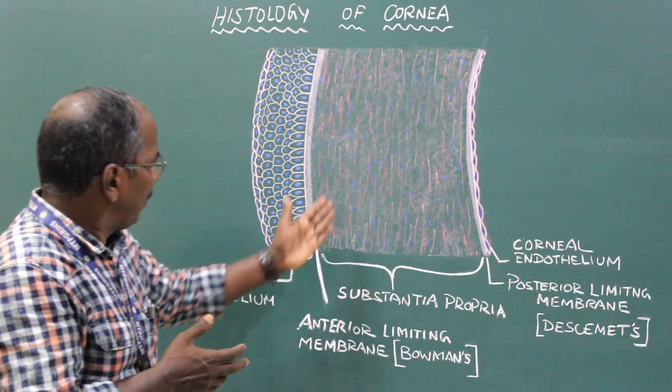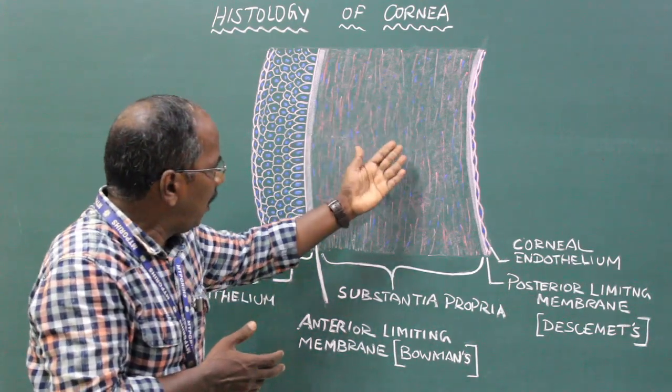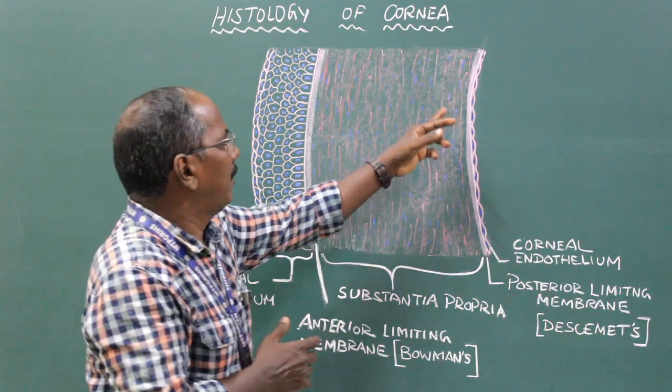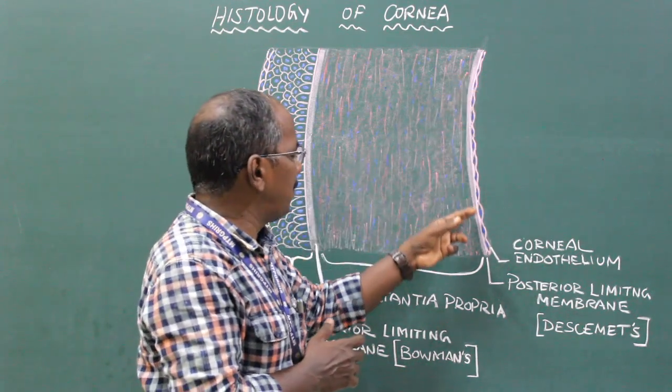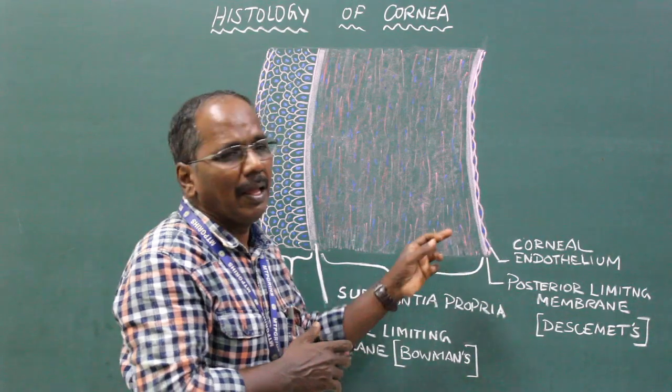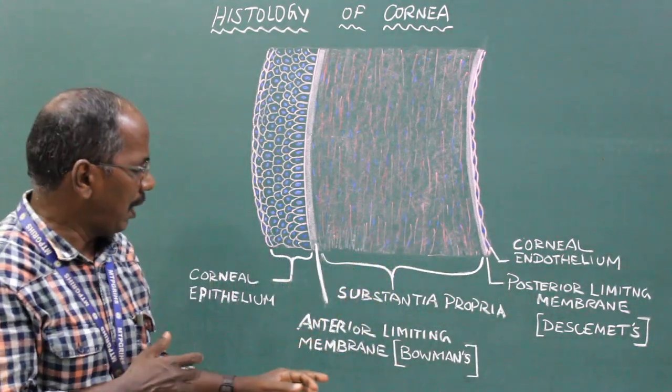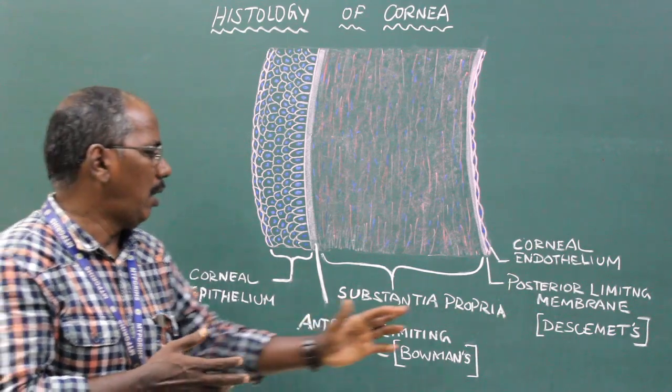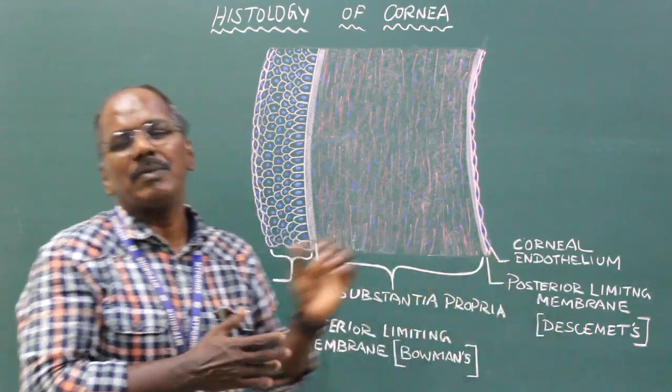The substantia propria of the corneal stroma rests on a thin, homogenous membrane or layer known as posterior limiting membrane, or Descemet's membrane.